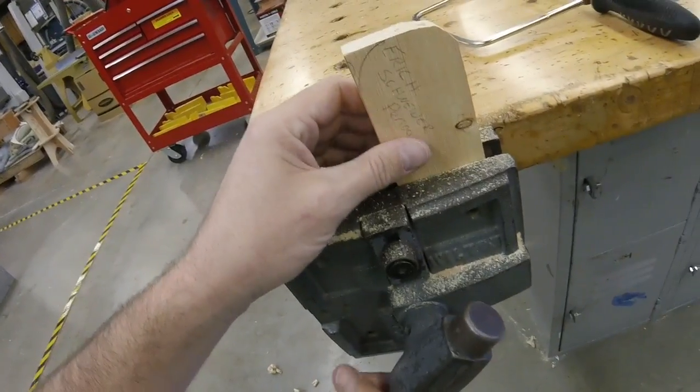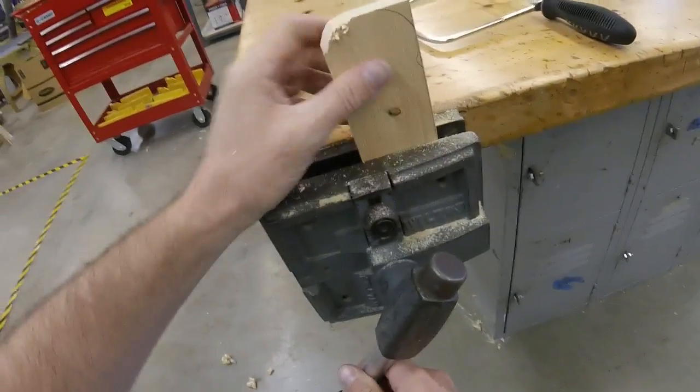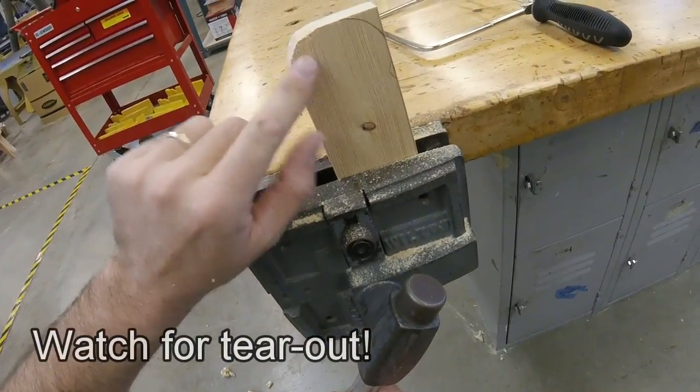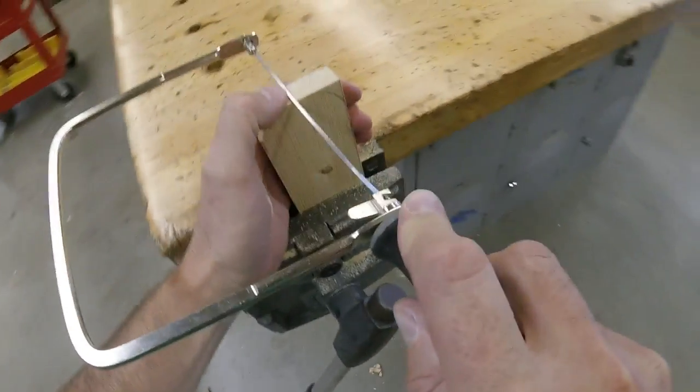That's kind of ugly. Let's try the other side. Notice on the back side, it did tear out the wood. So we're going to use a file to clean that up later. Let's see if we can make this one work better.